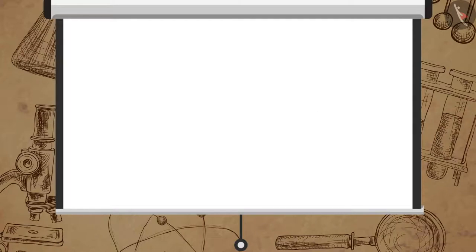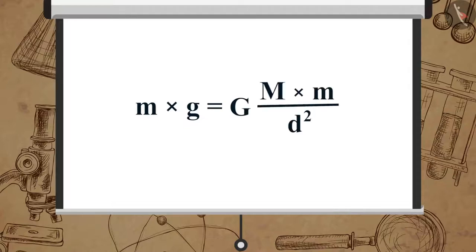Therefore, from the previous two equations, we can write M multiplied by g is equal to GM multiplied by M upon d square.